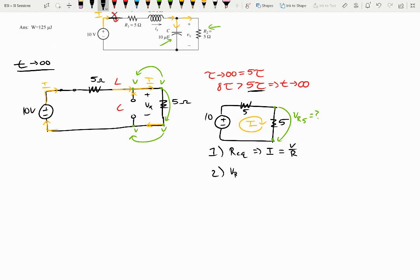So, if I want to find V R2, it'll be R5 over R equivalent times V of S. So, 5 over 5 plus 5 times 10 volts. It's the equivalent, these are in series. So, it's the equivalent series. So, plugging those numbers in, we'll get V R2 to equal 5 volts.